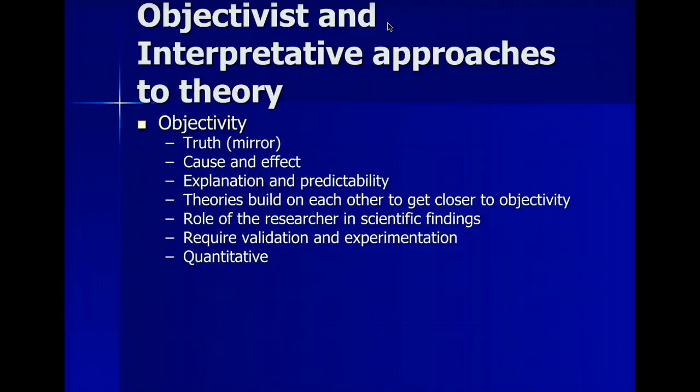The way that objectivity tries to do this is that it tries to establish cause and effect. Objective theories are all kinds of concerns with cause and effect. We want to know what makes this other thing happen.